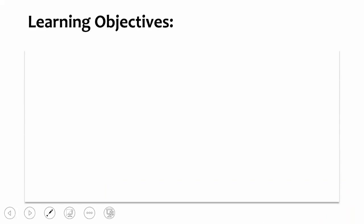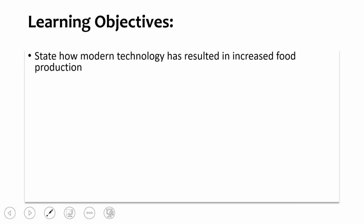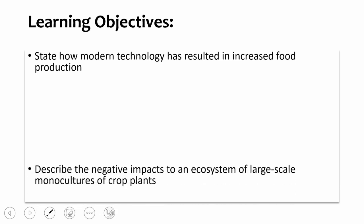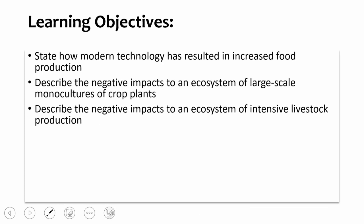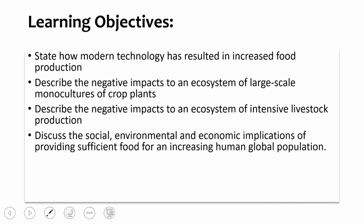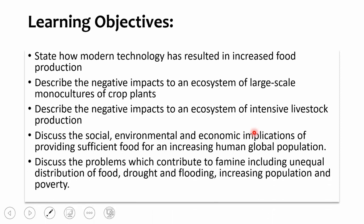Learning objectives for this lesson are: state how modern technology has resulted in increased food production; describe the negative impacts to an ecosystem of large-scale monocultures of crop plants and of intensive livestock production; discuss the social, environmental, and economic implications of providing sufficient food for an increasing human global population; and discuss the problems which contribute to famine, including unequal distribution of food, drought and flooding, increasing population, and poverty.